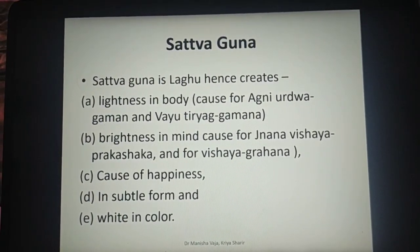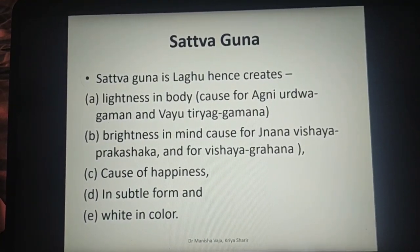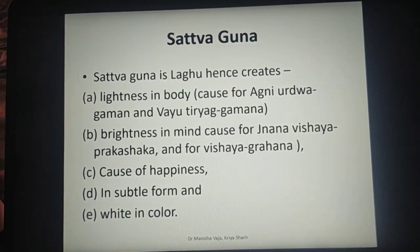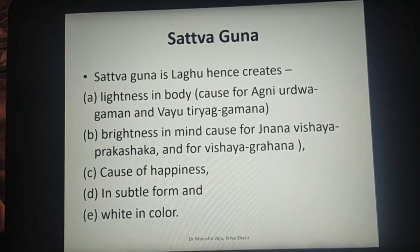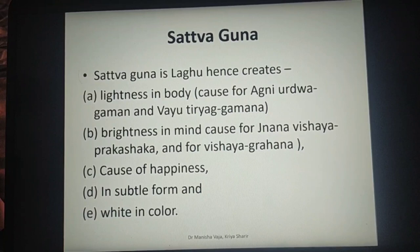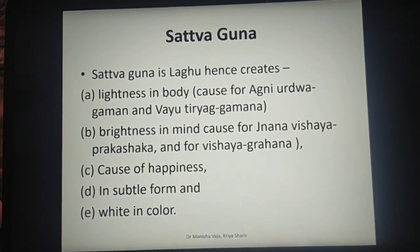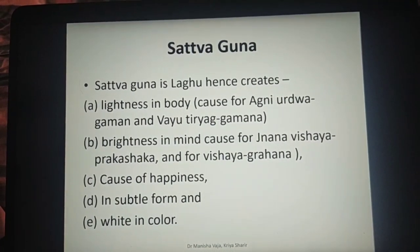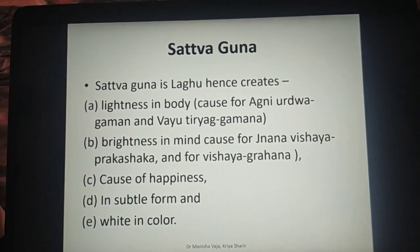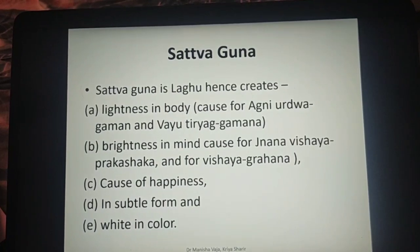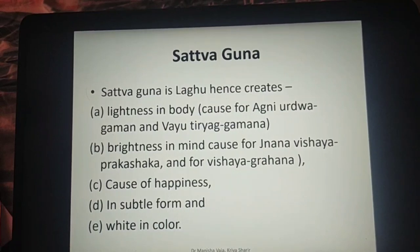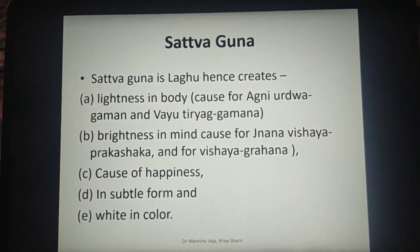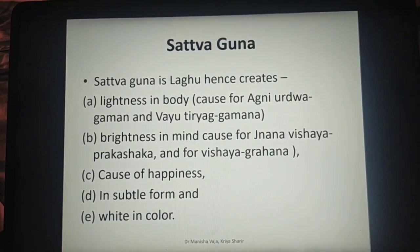Sattva Guna is Laghu, hence it creates lightness in the body, which is the cause for Agni's upward movement (Udva Gaman) and Vayu's lateral movement (Tiryak Gaman). It creates brightness in the mind, which is the cause for Jnana — it is Prakashak — and for Vishai Grahan, meaning to know something, gain knowledge, and grasp it. It is the cause of happiness, it exists in subtle form, and it is white in color, as mentioned by the Acharyas.